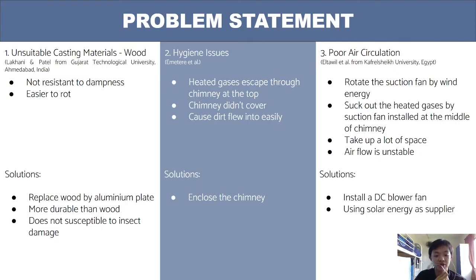Next is the design from Emeter. This solar dehydrator is designed with a chimney to allow heated gases to flow out, but this might bring hygiene issues as the surrounding air consists of many impurities, and the chimney design might cause impurities to flow into the chamber. To solve this, we suggest enclosing the chimney without affecting air circulation. The last design is from Caversham University. This design promotes solar wind ventilation to enhance air flow, but it is not suitable for our country due to unstable wind flow and also takes up a lot of space. We suggest installing a DC blower powered by solar energy to replace the wind-driven suction for a constant air flow rate.